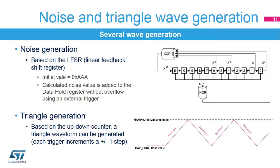The DAC digital interface integrates two special signal generators. The linear feedback shift register (LFSR) can create the noise signal for the DAC input. Each trigger updates the DAC output data by an LFSR block. The up-down counter with a programmable count value can create triangle wave data which can update the DAC output data. The data can also be updated by a trigger signal.